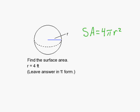So let's go ahead and finish this off. We have 4 times pi times 4 squared, which gives us 4 times pi times 16, which gives us 64 times pi. Now remember, this is a word problem so we have to put the units, which are feet squared. Remember it's surface area, so the units are squared.